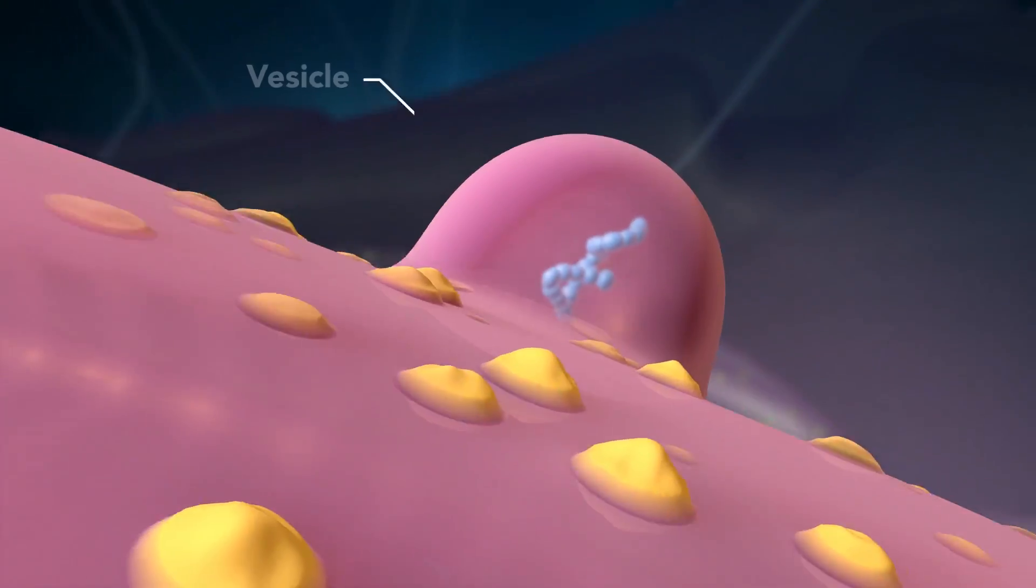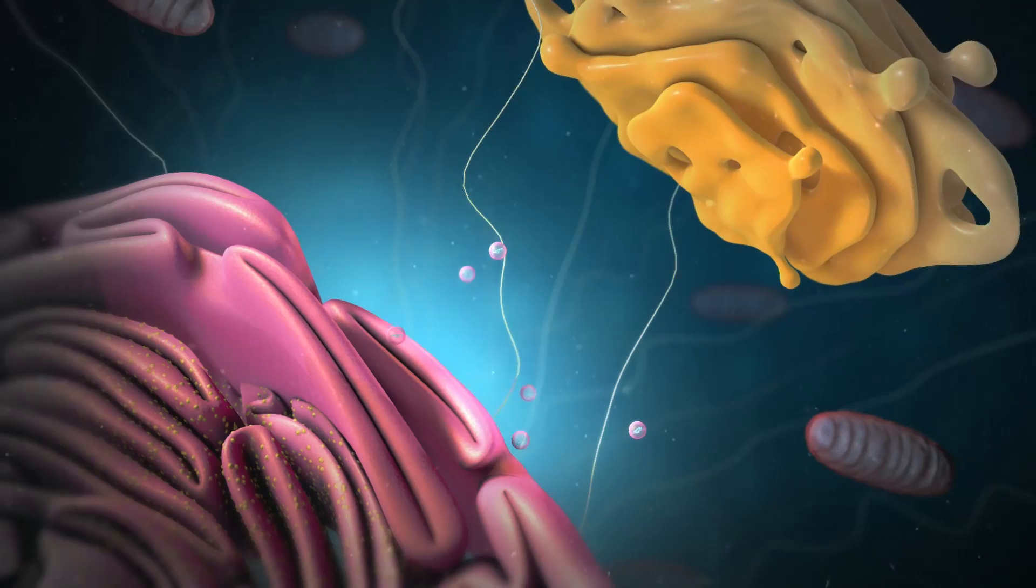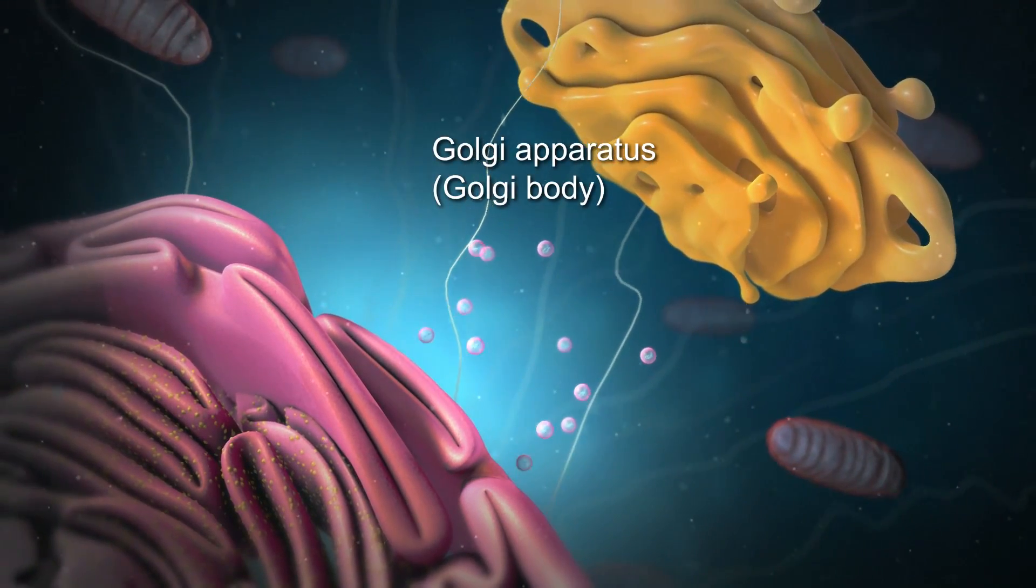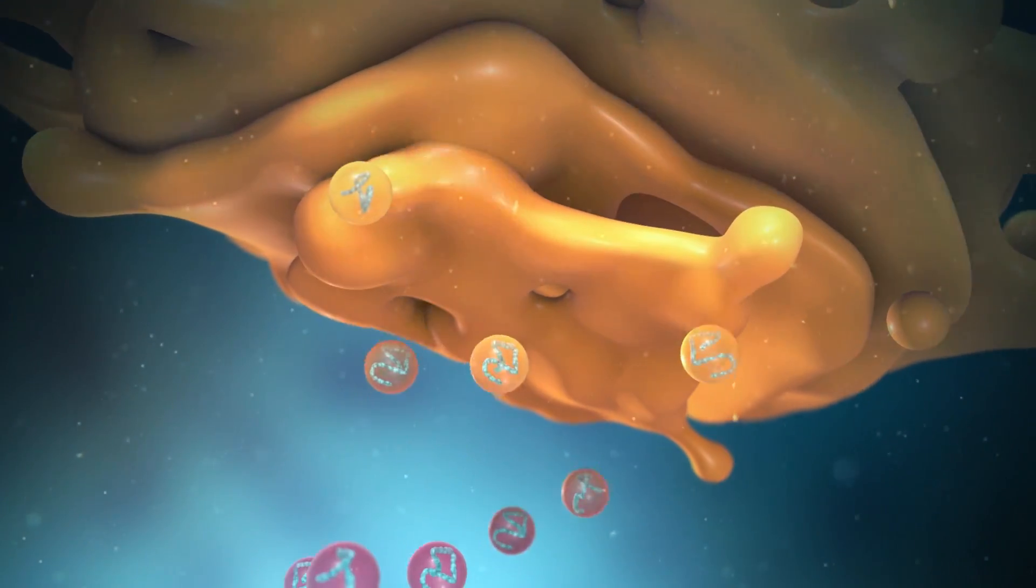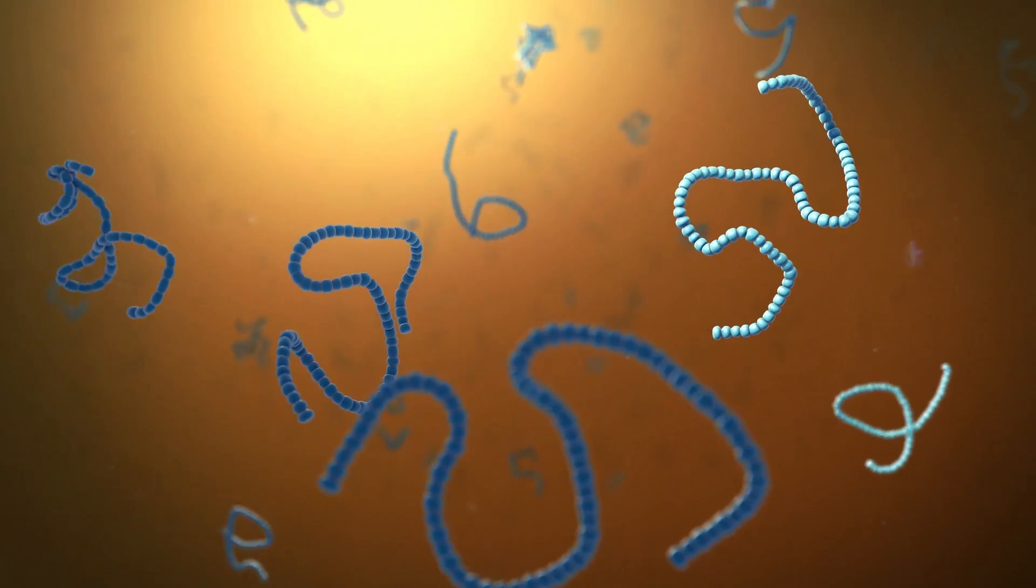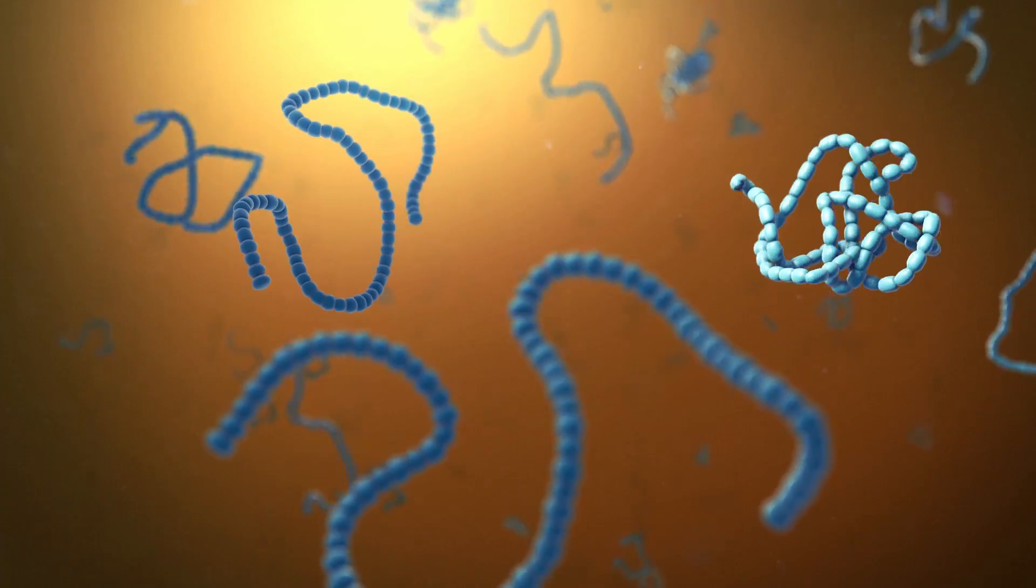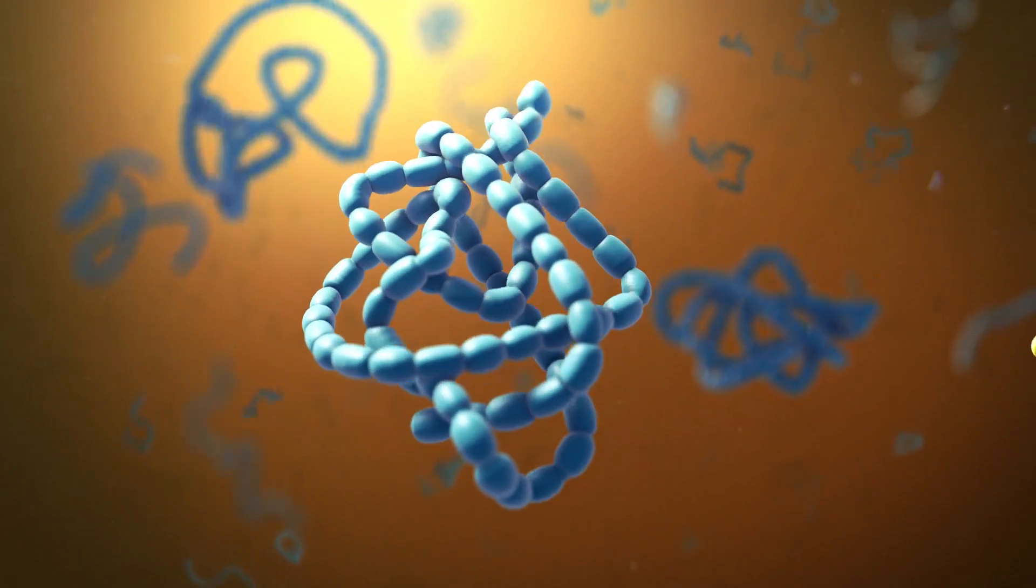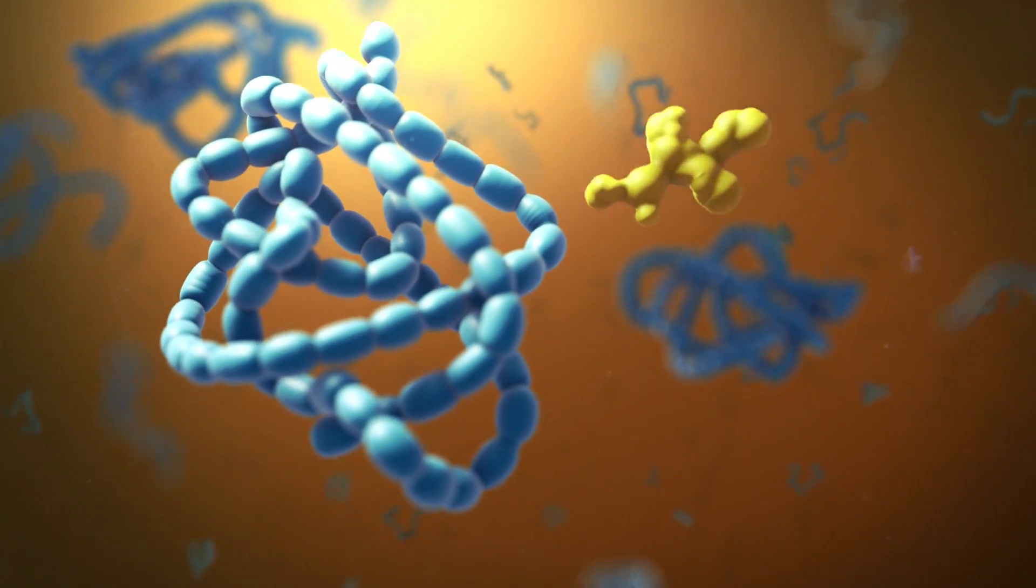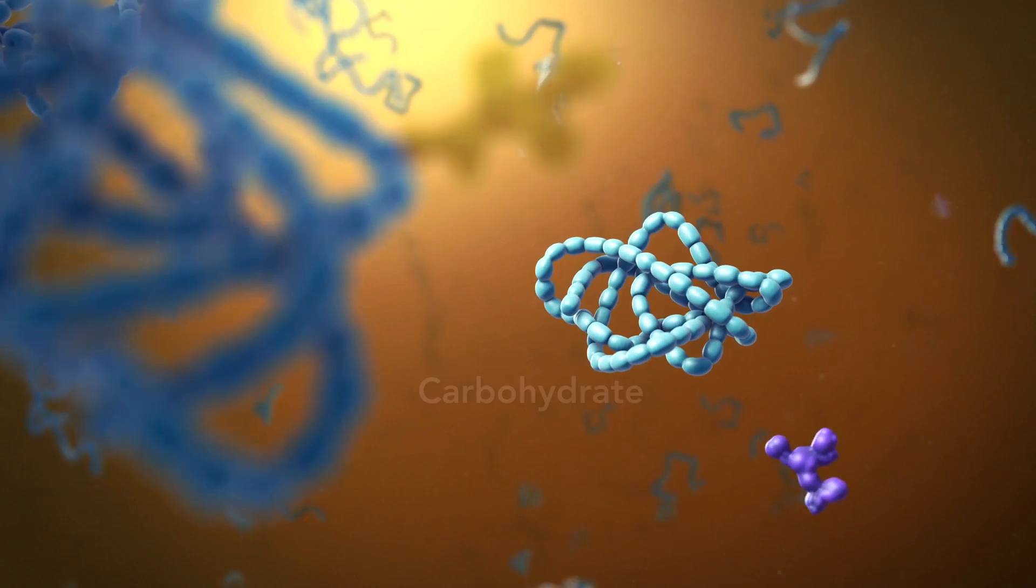Proteins and other materials emerge from endoplasmic reticulum in small vesicles, where the Golgi apparatus, sometimes called the Golgi body, receives them. As proteins move through the Golgi body, they are customized into forms that the cell can use. The Golgi body does this by folding the proteins into usable shapes or adding other materials onto them, such as lipids or carbohydrates.